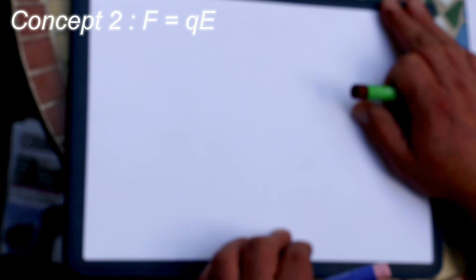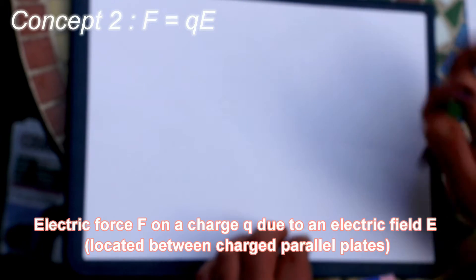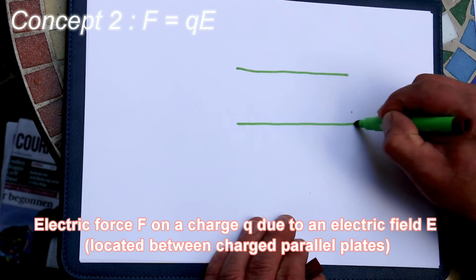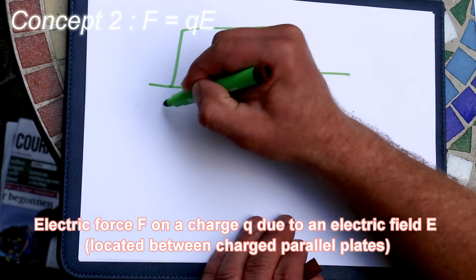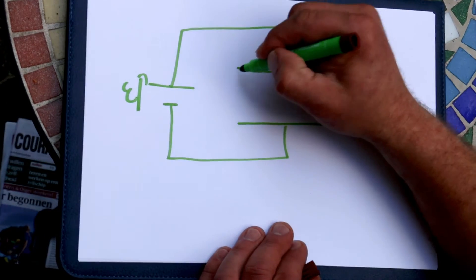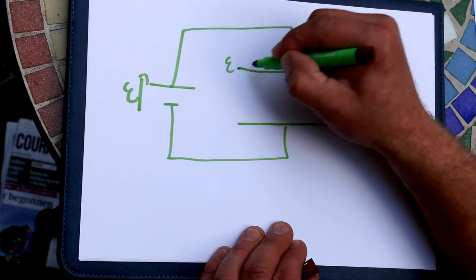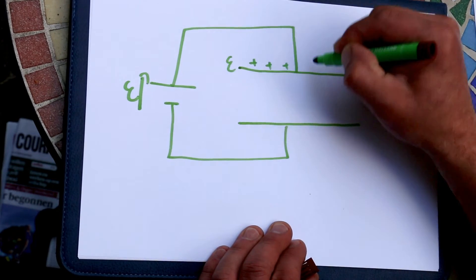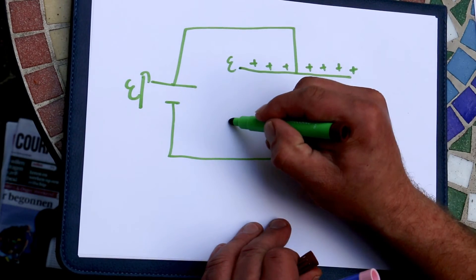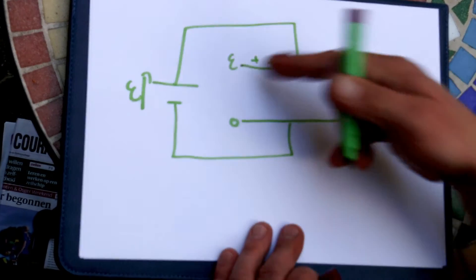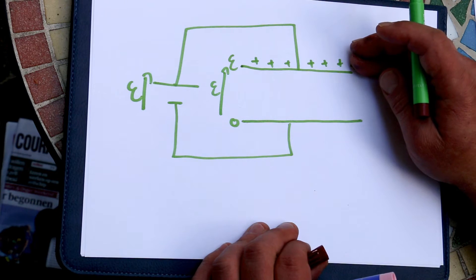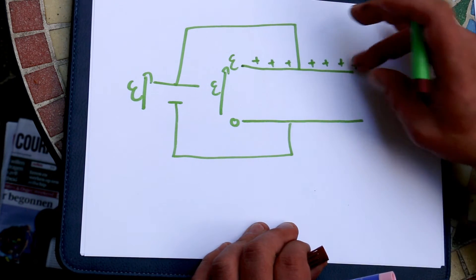The second concept you need to remember is the idea of charged parallel plates. Imagine I have two parallel plates that I connect to a battery of EMF ε. That means that the potential on this plate will be ε — the charges here will have for each unit charge ε joules of energy. Here you will have a potential of zero. So you have a potential difference between these two plates, which is also ε.